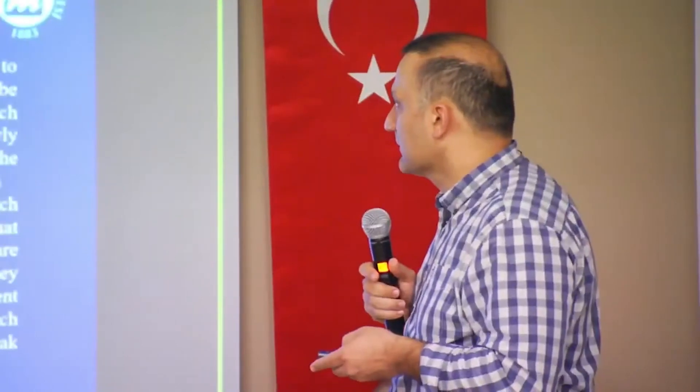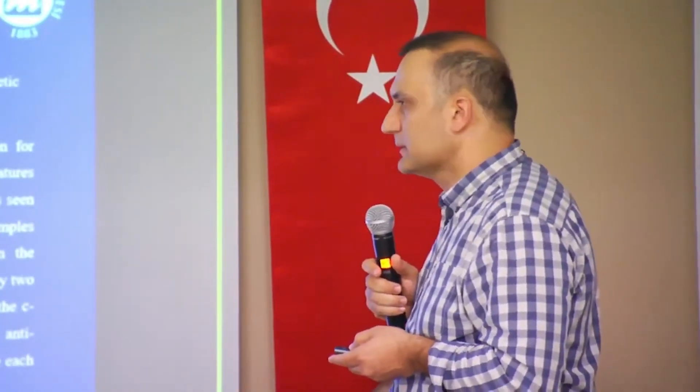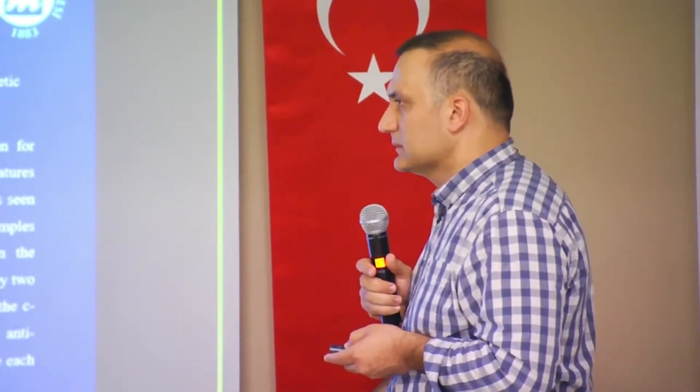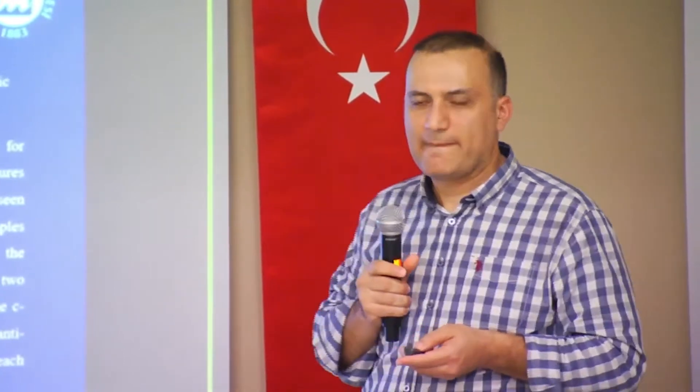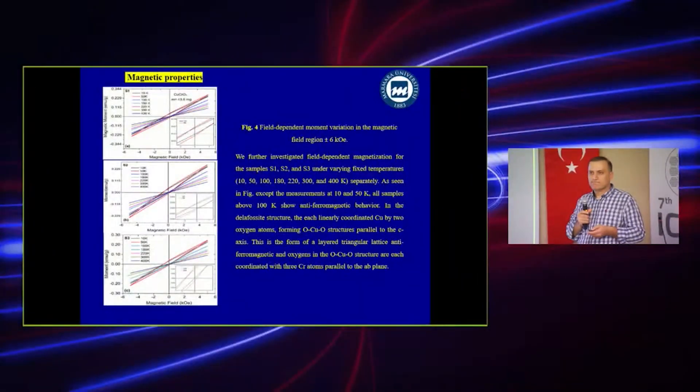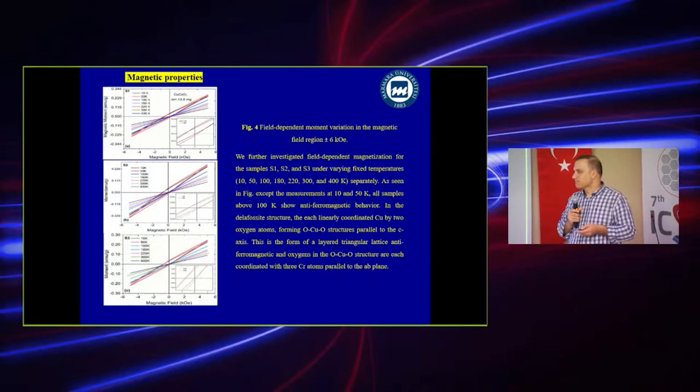Maybe the vertical axis is in emu per gram, right? Then note that the values are small compared to a ferromagnet, which are three orders of magnitude bigger probably, right?